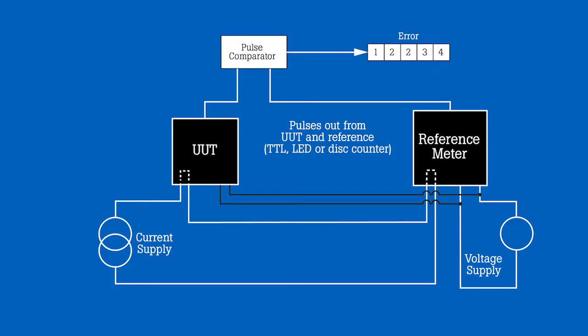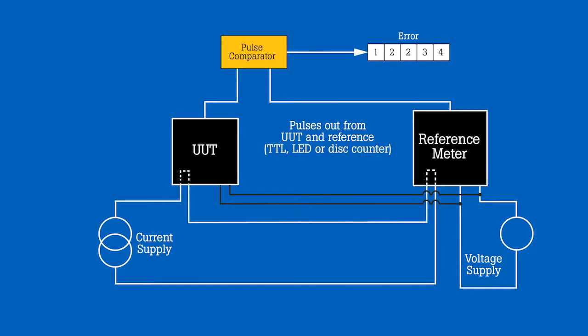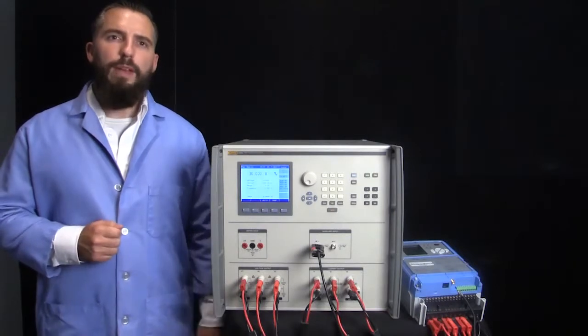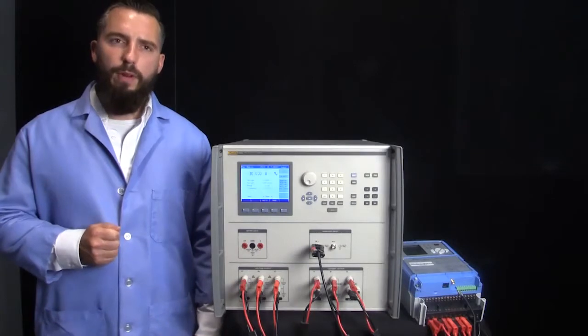Three separate pieces of calibration equipment are required to complete this task. One, a power supply that can provide three phases of voltage and current. Two, a three-phase reference energy meter. And three, a device for counting pulses both from the reference meter and the UUT, which then compares the two counts. As you can imagine, this is a lot of work to make sure that each piece of equipment is connected and communicating properly.